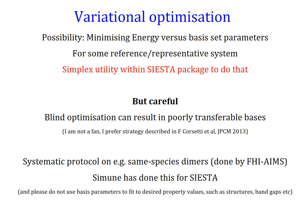There is a simplex utility in the SIESTA package that allows you to do that optimization easily. But I would be careful with that — blind optimizations can result in poorly transferable basis sets. I prefer the strategy presented in the paper by Corsetti and others, which essentially uses variational optimization of the second zeta radius of the basis sets. There is also the possibility of doing this systematically on reference systems throughout the periodic table, as done by the code FHI-aims. Simone has done that for SIESTA using elemental dimers. Please try to avoid using basis set parameters to fit properties — that is not what they are meant for.